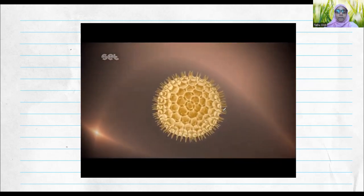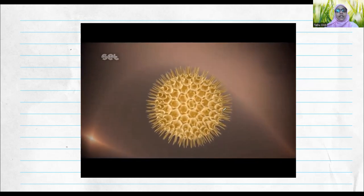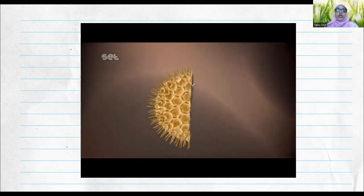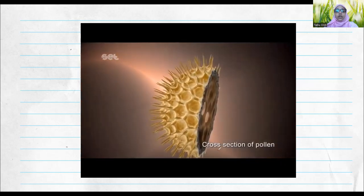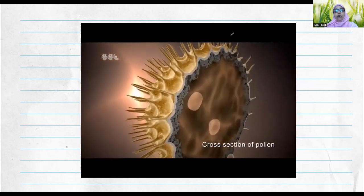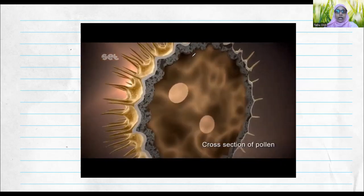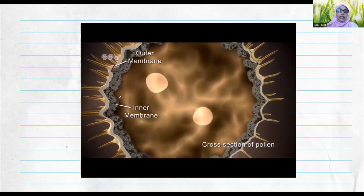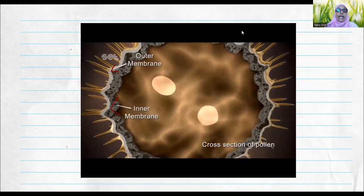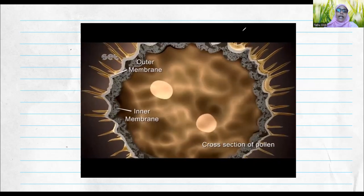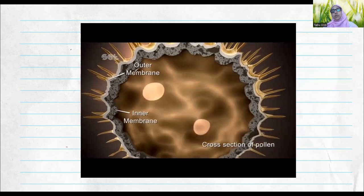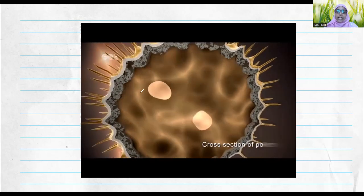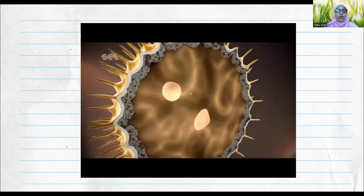When you do a cross-section of a pollen grain, this is how the layers look: the outer membrane — the exine — and the inner membrane — the intine. The outer membrane, exine, is made up of sporopollenin; the inner membrane, intine, is made up of cellulose. You can see two nuclei inside as a result of mitotic division.